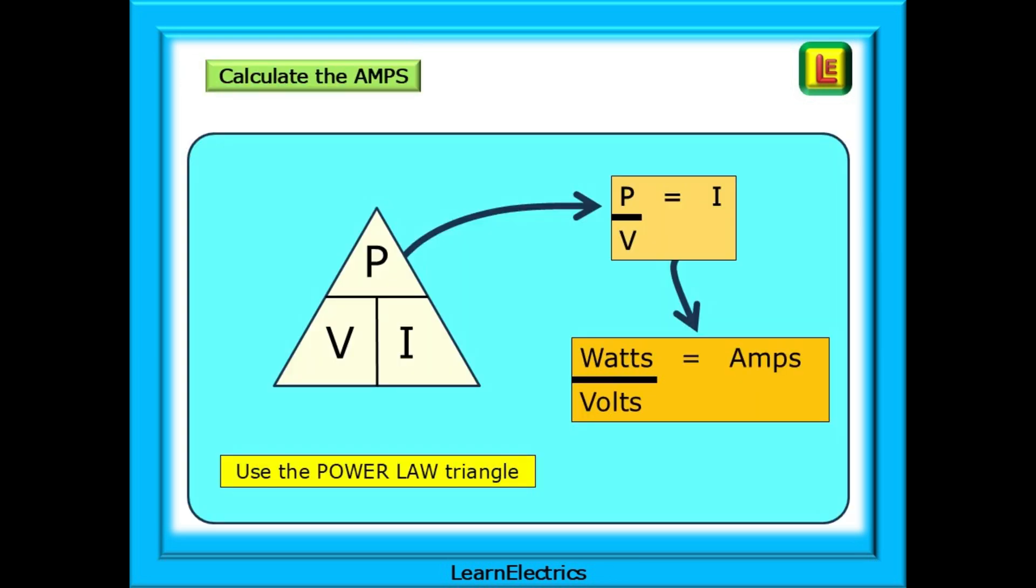Very often, we will know the watts or kilowatts for the load or appliance, but we need the information in amps. For this, we can use the power law triangle as shown here. If we know the power, P, in watts, and we know the voltage, V, of the circuit, then we can easily calculate the amps. P divided by V gives I. Or, some people will say, watts divided by volts will tell us the amps.